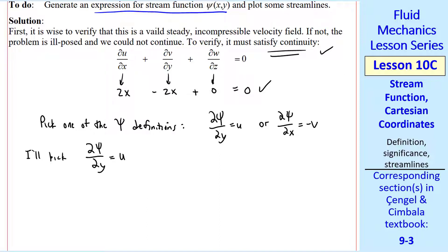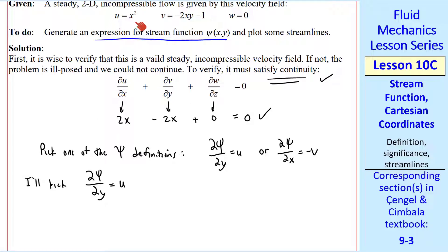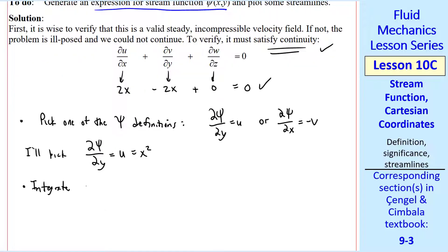Del psi del y equal u and u is x squared from the given information. Now we integrate with respect to y. So we get psi equal x squared y plus some function of the other variable, in this case x, since this is a partial integration. So we don't add a constant but a function of the other variable.